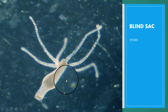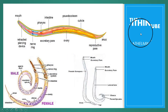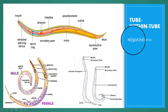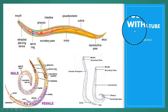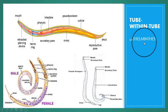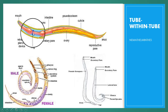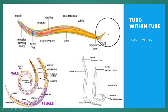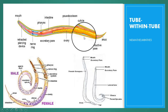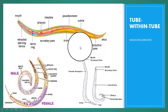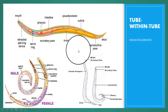The third type is the tube within tube animal body plan, found in higher eumetazoans from nematohelminthes onward. Their body consists of two tubes: the outer body wall and the inner gut. The cells of the inner tube are specialized for digestion and absorption of digested food material.